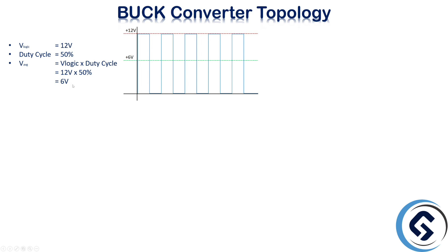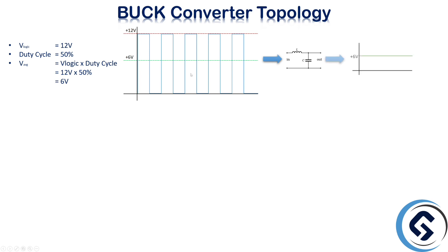In this case, +6V is an average voltage, which means we are not able to use this +6V directly in the application, because this is just an average voltage, not an actual voltage. The way to convert this average voltage to an actual voltage is by applying that PWM signal to an LC filter. By applying that PWM signal to the LC filter, we will receive a straight line of +6V.